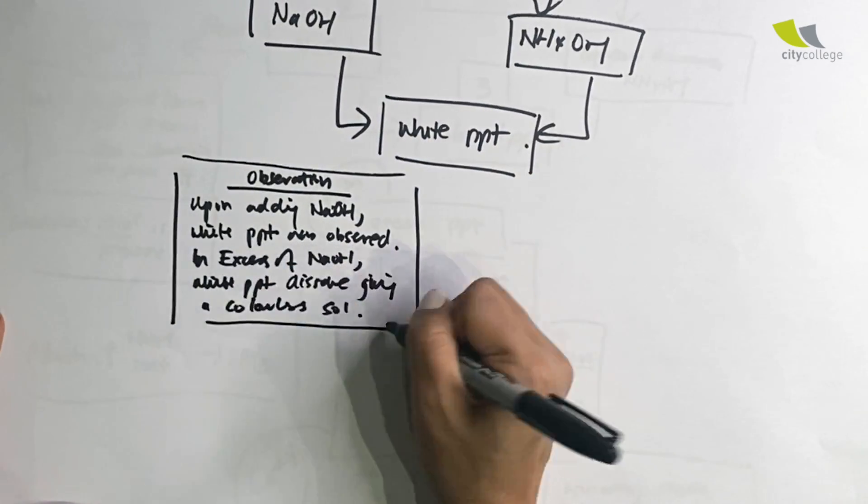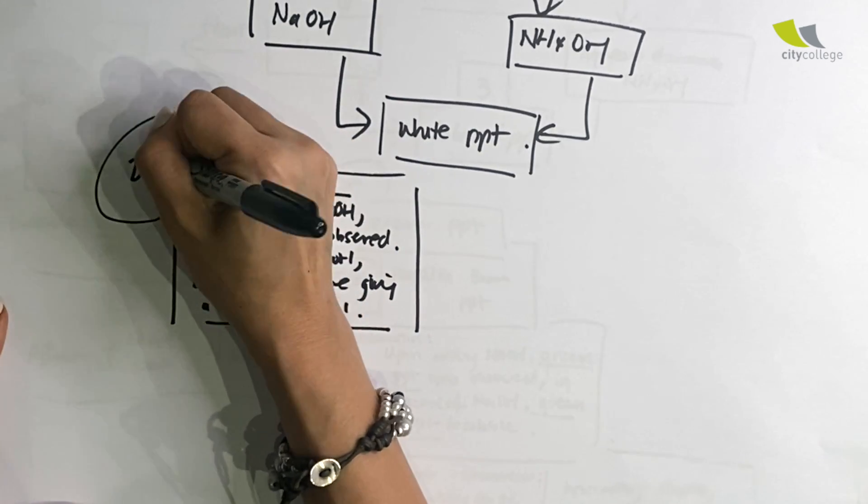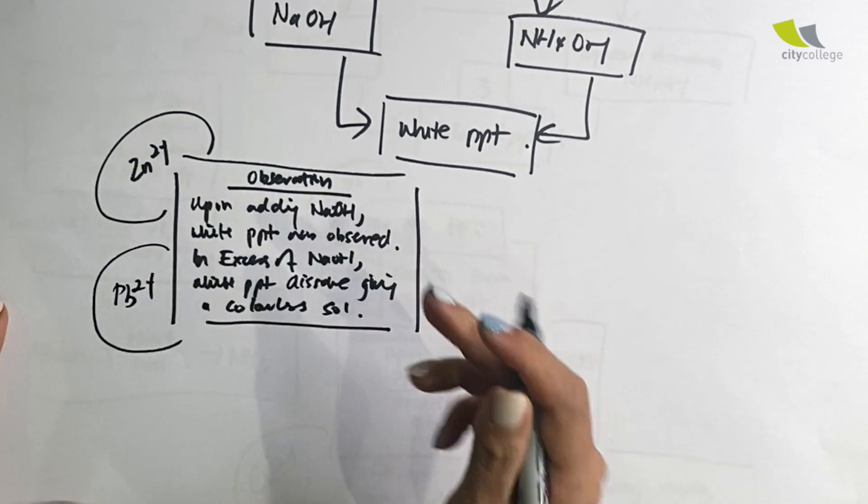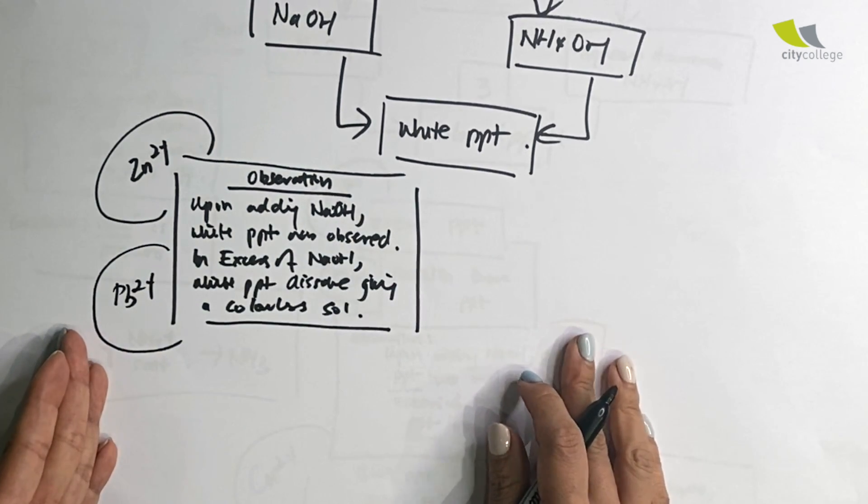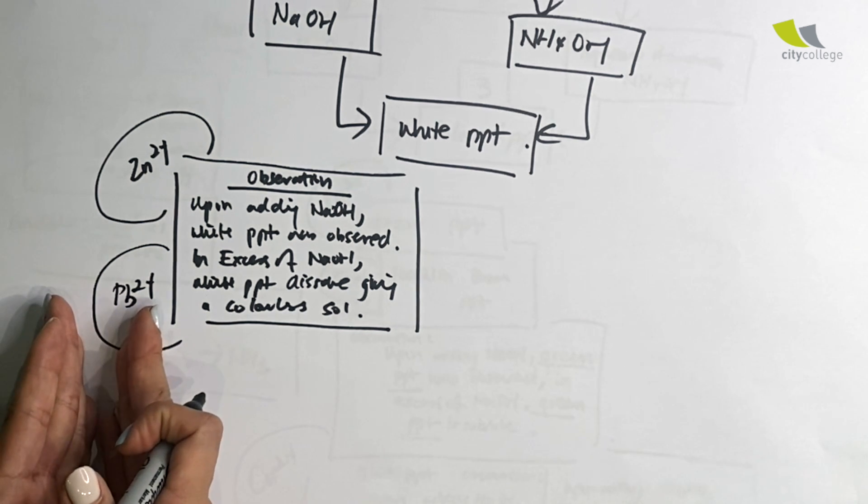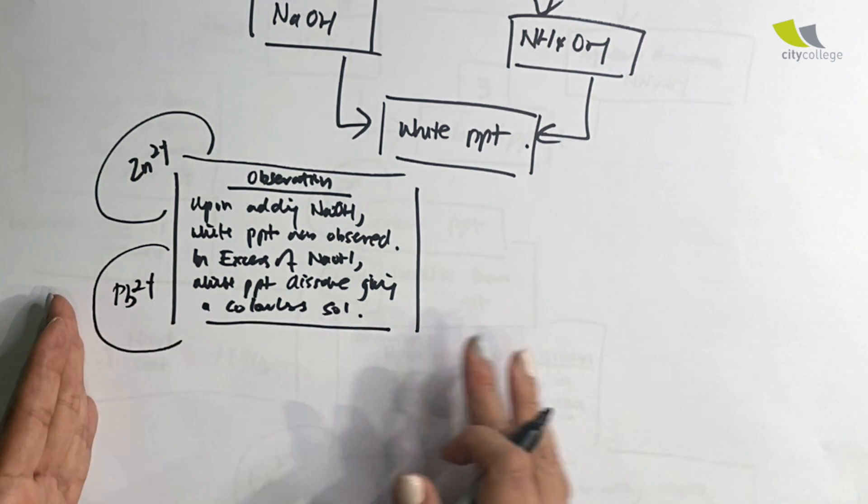It brings me to two cations. One of them is Zn2+, and another one is actually Pb2+. If you're doing pure chem, Al3+ will occur in this category as well. All right, now how do I differentiate these two then? Well, that's why NH4OH will come in.